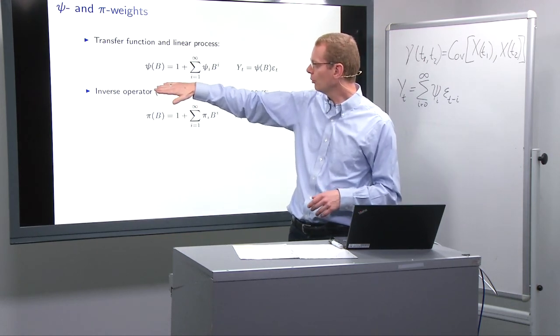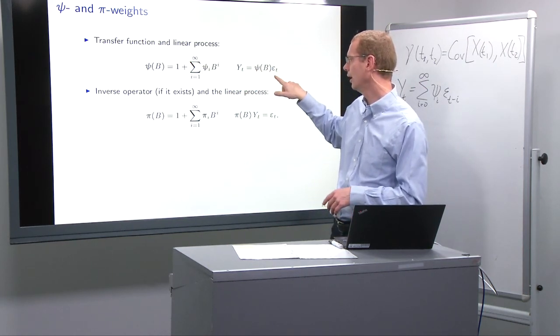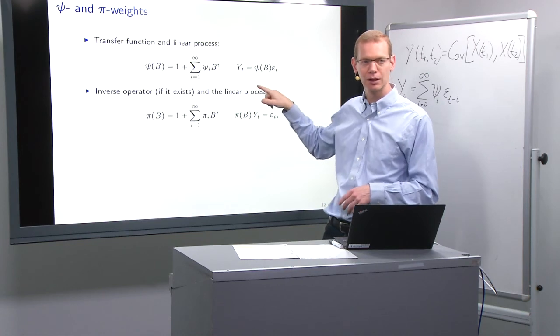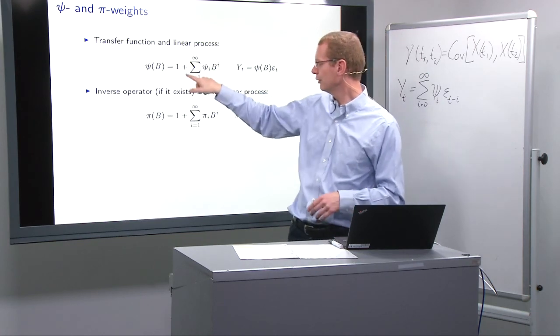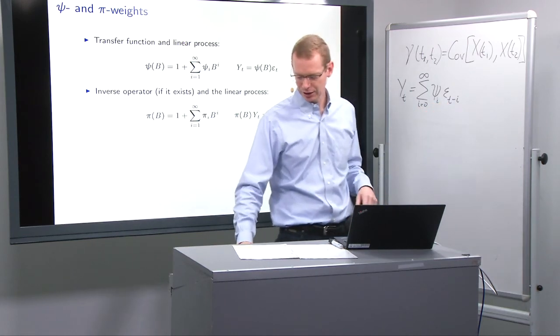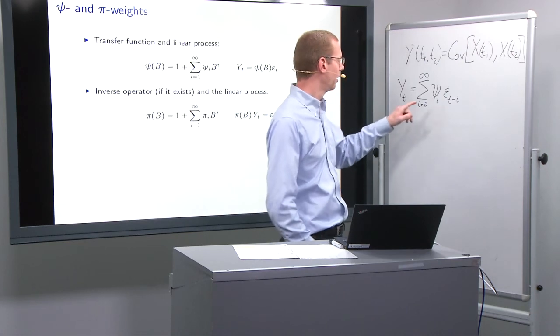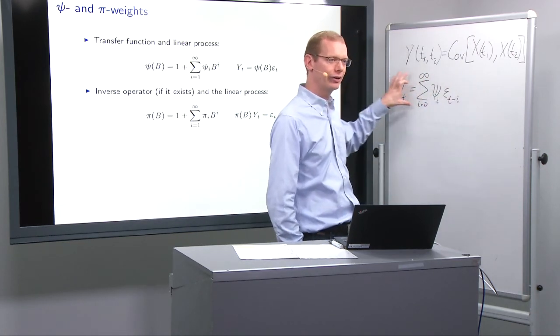With this operator polynomial, we can write the process like this. Because you have the infinite sum here, and the backward shift operator will give you exactly what we have out here at this term.